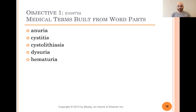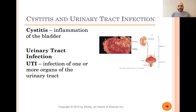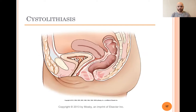Dysuria means painful or difficult urination. Hematuria means blood in the urine. Nephritis — nephr means kidney, so nephritis means inflammation of the kidney. Cystitis is inflammation of the bladder, and you can see this picture doesn't look too good. Any time any part of the urinary tract is infected, we call that a UTI — urinary tract infection. This is what cystolithiasis, stones in the bladder, looks like.